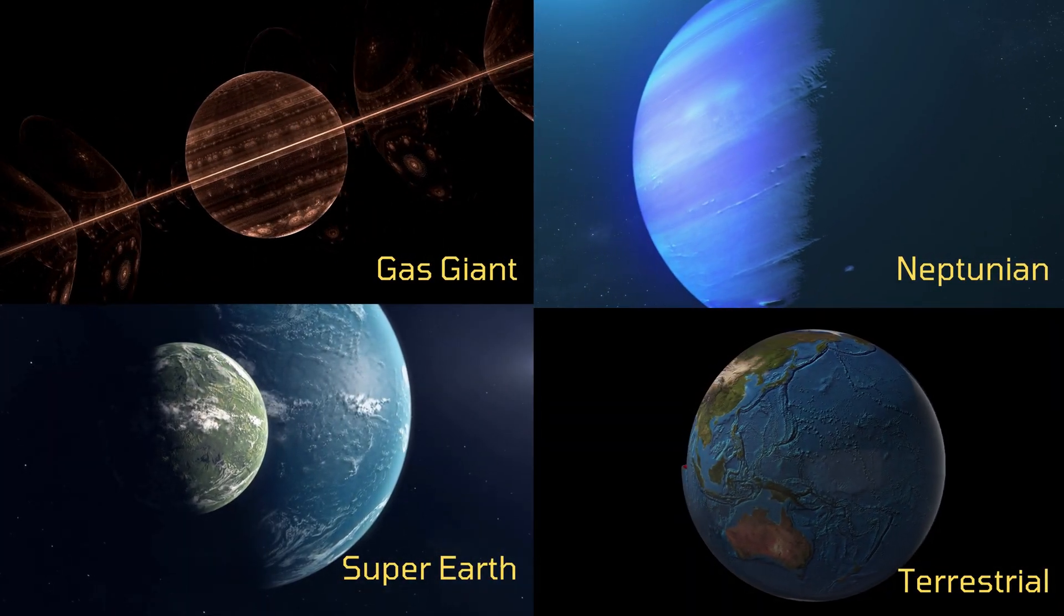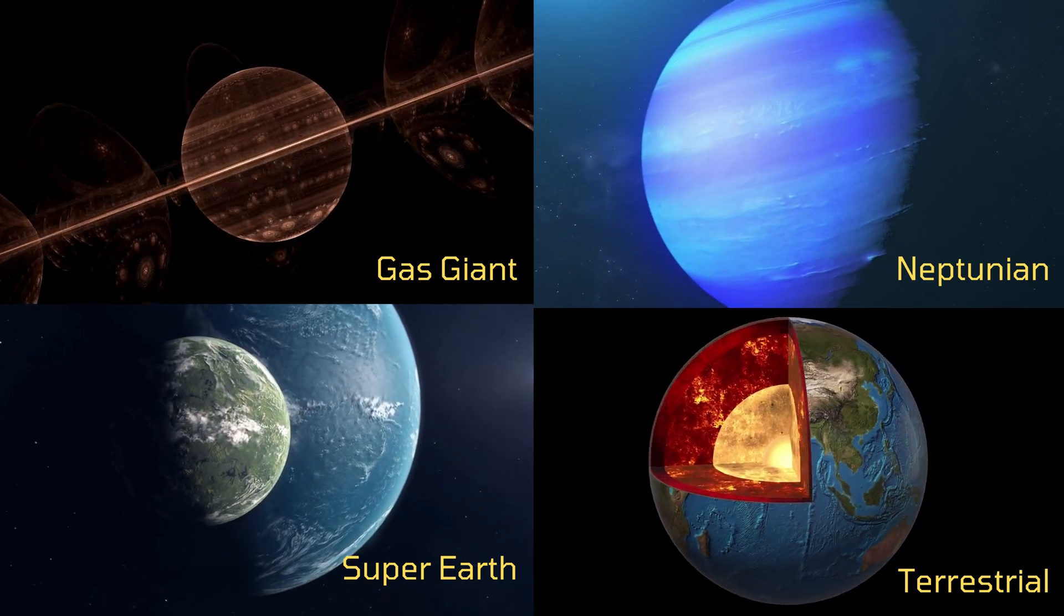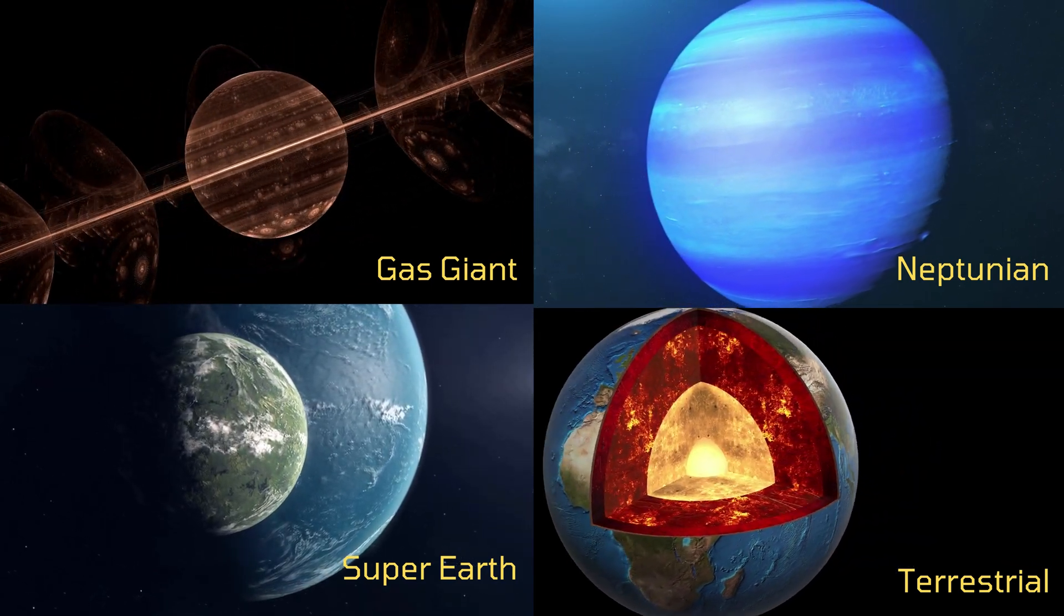NASA categorizes exoplanets into four types: gas giant, Neptunian, super-Earth, and terrestrial.